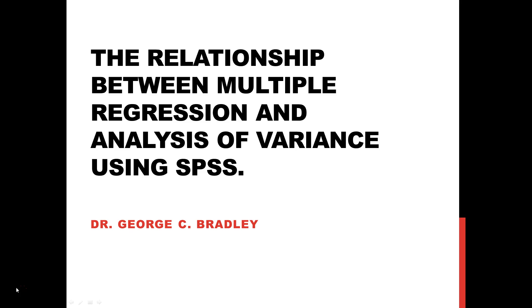In multiple regression analysis we have considered only continuous criterion and predictor variables. In ANOVA, the independent variable is categorical — we use K levels to represent group memberships — with only the dependent or criterion variable being continuous. It is possible, however, to create predictor variables that represent group membership in ANOVA and to use these predictor variables in multiple regression analysis.